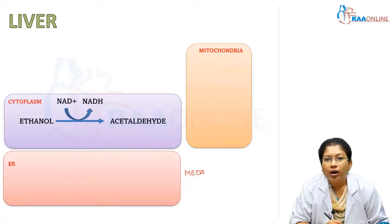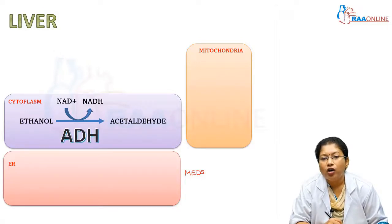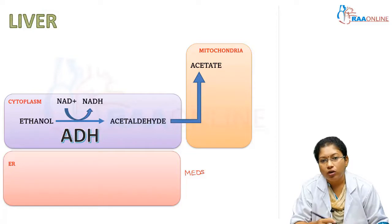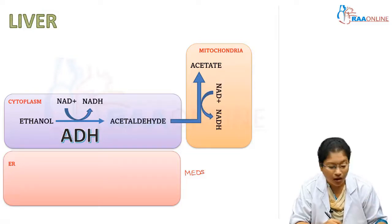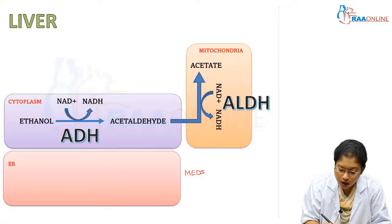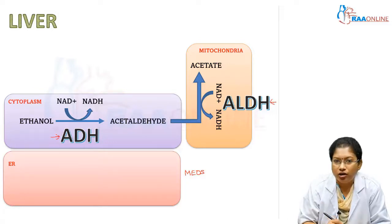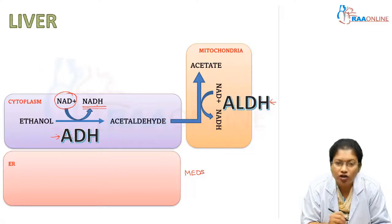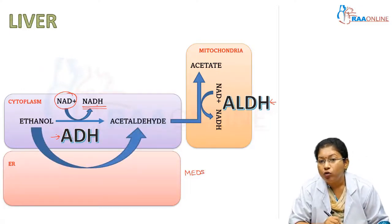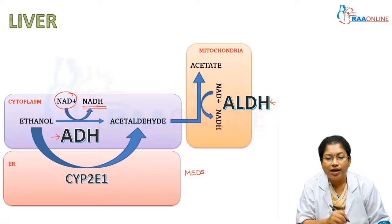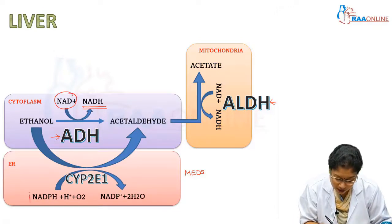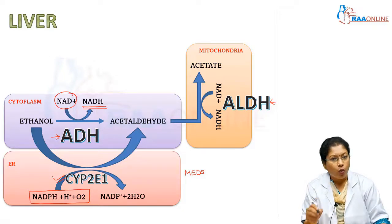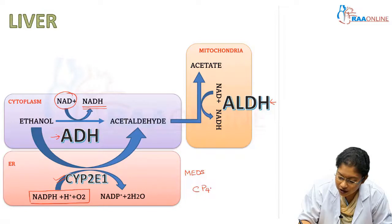Ethanol is oxidized by NAD+ to NADH by alcohol dehydrogenase. Then this acetaldehyde is converted to acetate, also oxidized by NAD+ to NADH, by the enzyme aldehyde dehydrogenase. So, alcohol dehydrogenase and aldehyde dehydrogenase both use NAD+ as the hydrogen acceptor and form NADH. Whereas, the microsomal ethanol oxidizing system converts ethanol to acetaldehyde using NADPH. The enzyme here is cytochrome P2E1, one of the cytochrome P450 enzyme systems.